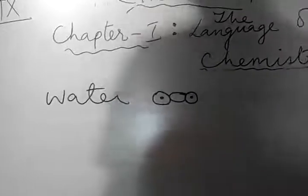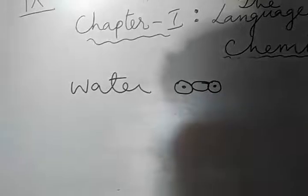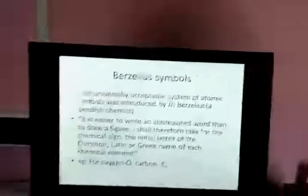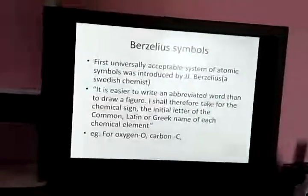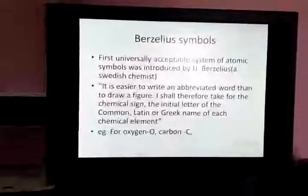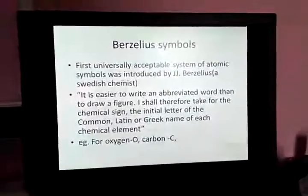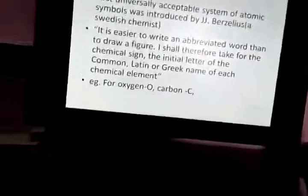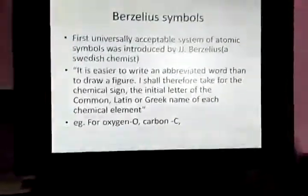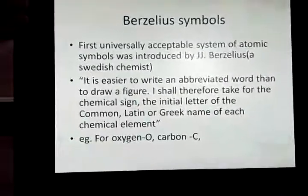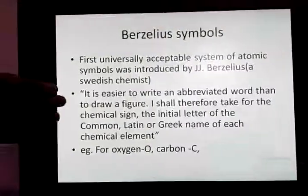However, Dalton's system also did not last long. So we move on to the next one — Berzelius symbols. The first universally accepted system of atomic symbols was introduced by J.J. Berzelius, who was a Swedish chemist. In his findings, he concluded it is easier to write an abbreviated word than to draw a figure.